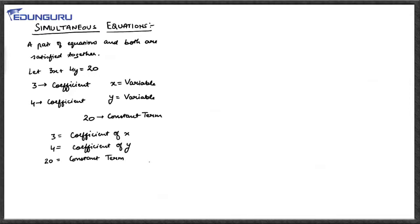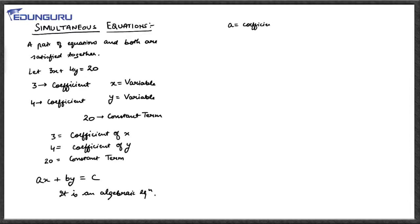This is an equation of numeric type where we see numerical values. The same equation could also have algebraic coefficients — for example, ax plus by is equal to c. Nothing is different; it is just that the coefficients have become algebraic instead of numeric. x and y remain the variables, a is the coefficient of x, b is the coefficient of y, and c is the constant.